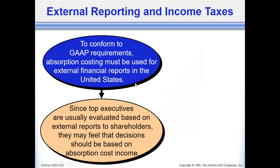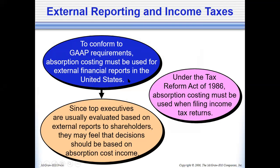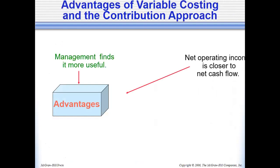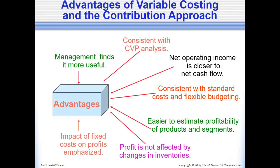For external reporting and income taxes, GAAP requires absorption costing. This discussion applies in the United States as well as the Philippines. Since top executives are usually evaluated based on external reports to shareholders, they may feel decisions should be based on absorption costing. For taxation purposes in the US, absorption costing is also used when filing returns. For management purposes, there are normally two reports — one for external use and one for internal use.